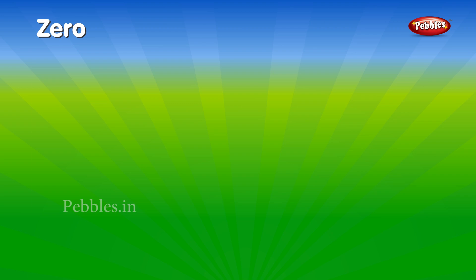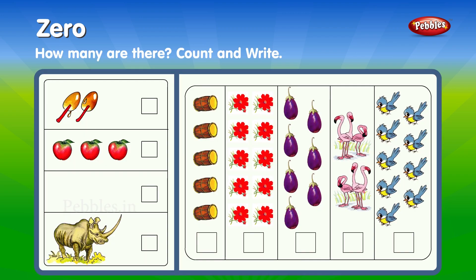How many are there? Count and write: 2, 3, 0, 1, 5, 10, 7, 6, 9.